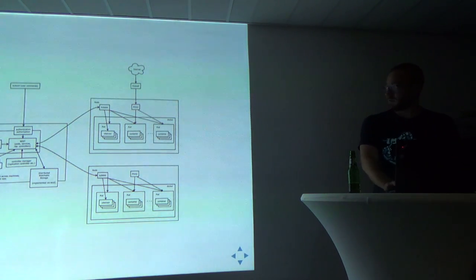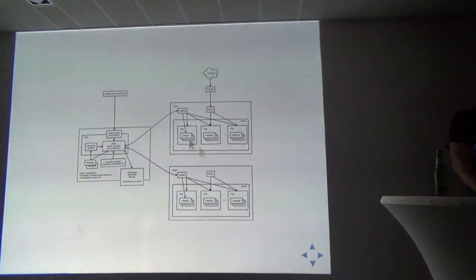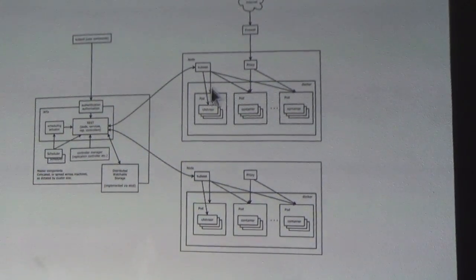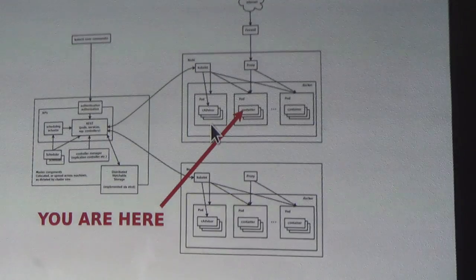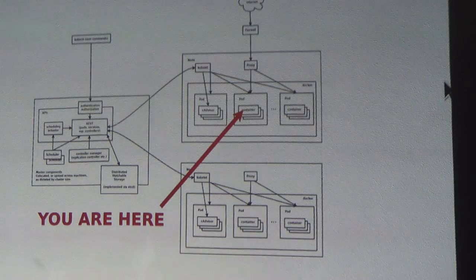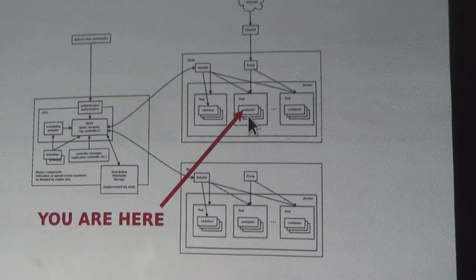This is what a Kubernetes cluster sort of looks like. You have a Kubernetes master, you have a node, the Docker engine, and then this is the pod. The Docker container is this really small entity, but the pod is the entire entity that gets scheduled within your orchestration software. If you're looking at this from a Docker perspective, you have this tiny container here and then there's the pod around it.